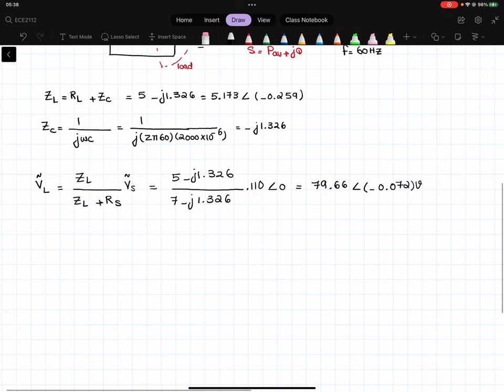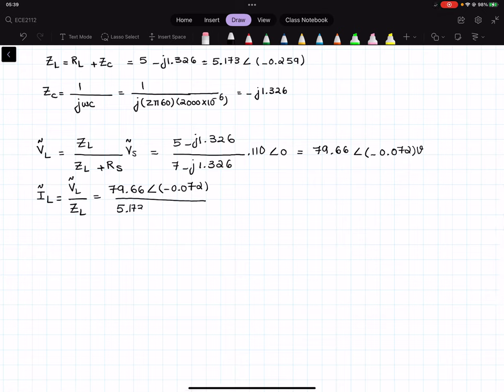So now, I have the RMS load voltage, and I have the ZL, that is the impedance of the load. So I can easily find the RMS load current. So IL, the RMS IL, will be equal to VL over ZL. That is Ohm's law. So now, VL is 79.66 with the angle of negative 0.072 volts over my ZL, and then ZL was 5.173 with the angle of negative 0.259. And that will give us 15.44 with the angle of 0.187 amps.